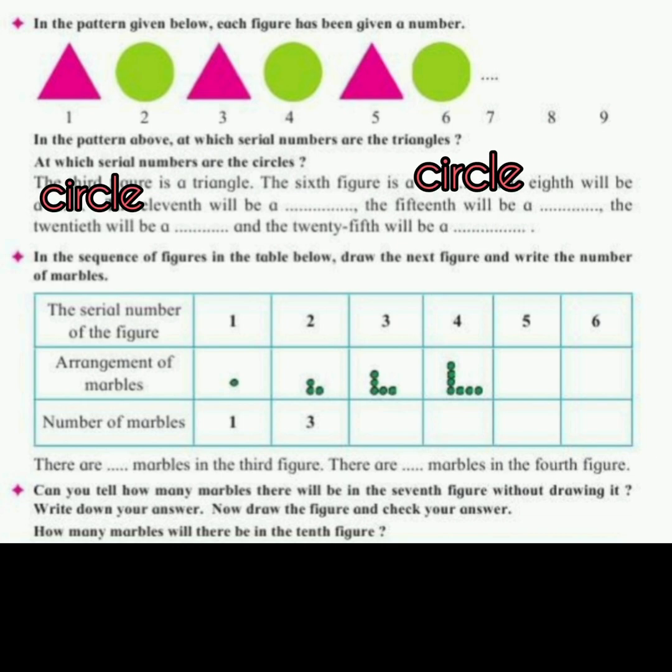The eighth will be a circle, the eleventh will be a triangle, the fifteenth will be a triangle, the twentieth will be a circle, and the twenty-fifth will be a triangle.